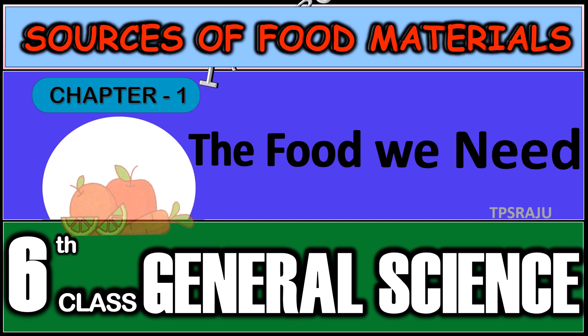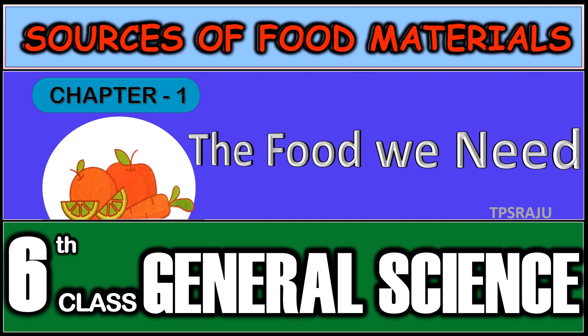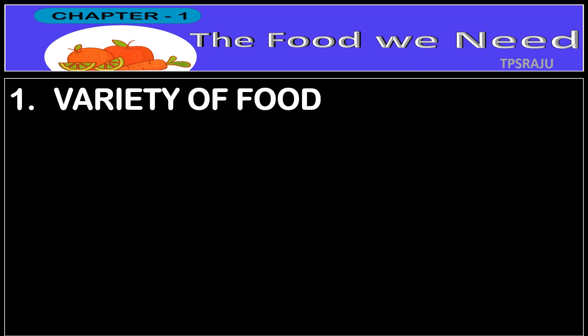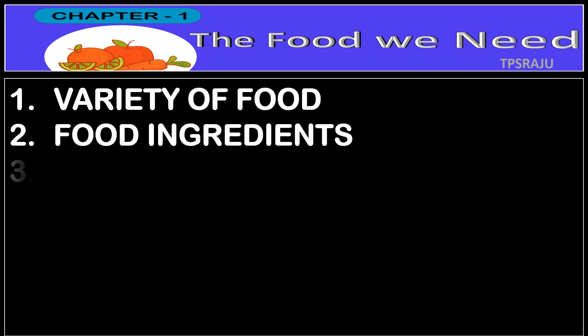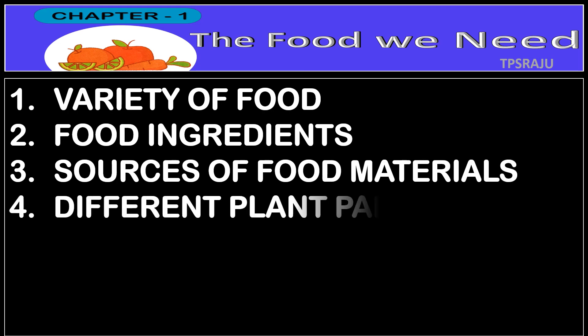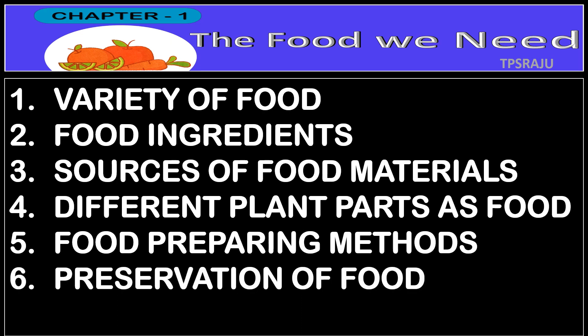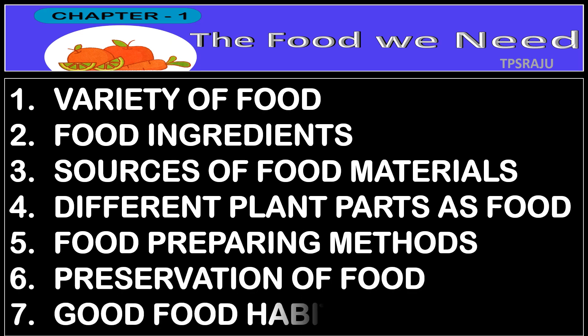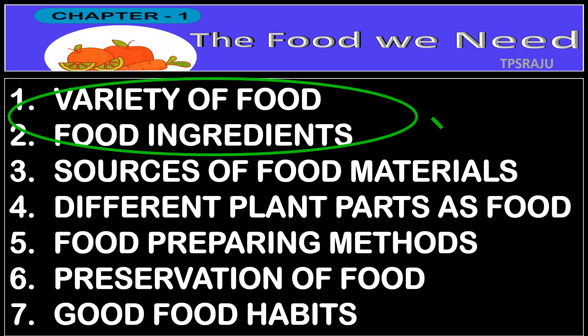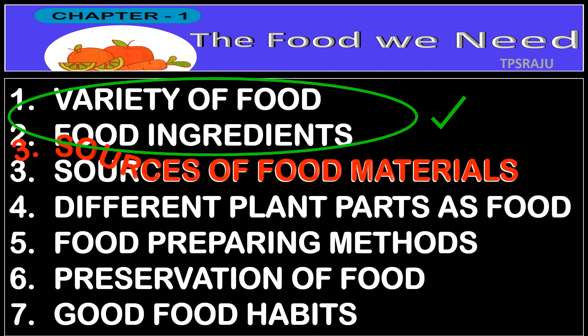We already know that there are seven topics in this chapter: variety of food, food ingredients, sources of food materials, different plant parts as food, food preparing methods, preservation of food, and good food habits. In the previous videos we already learned about the first two topics. In this video we are going to learn about sources of food materials.